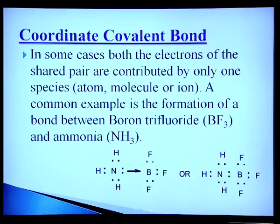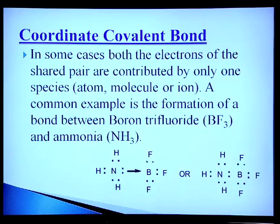Another category is the coordinate covalent bond. In some cases, both electrons of the shared pair are contributed by only one species — atom, molecule, or ion. A common example is the formation of a bond between boron trifluoride (BF₃) and ammonia (NH₃). Nitrogen donates a lone pair of electrons to BF₃ to give the NH₃·BF₃ addition compound.